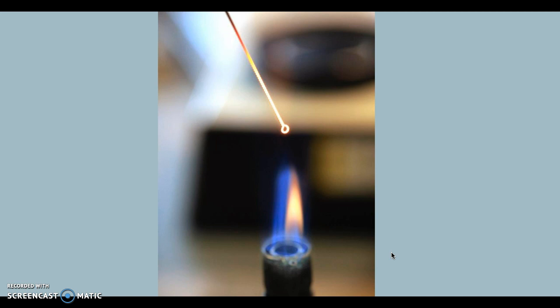Turn on a Bunsen burner and flame the loop through it. Flame it from base to tip at a 45 degree angle and make sure that the loop glows bright red. Allow the loop to cool completely. You want to make sure this is done correctly in order to avoid any kind of cross contamination that may be on the loop prior.